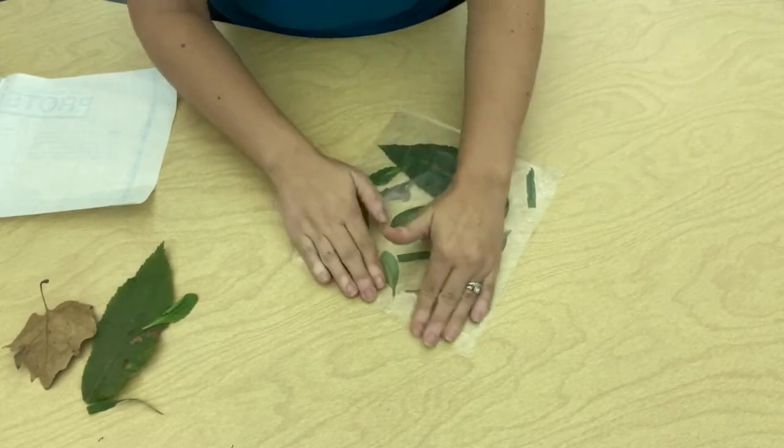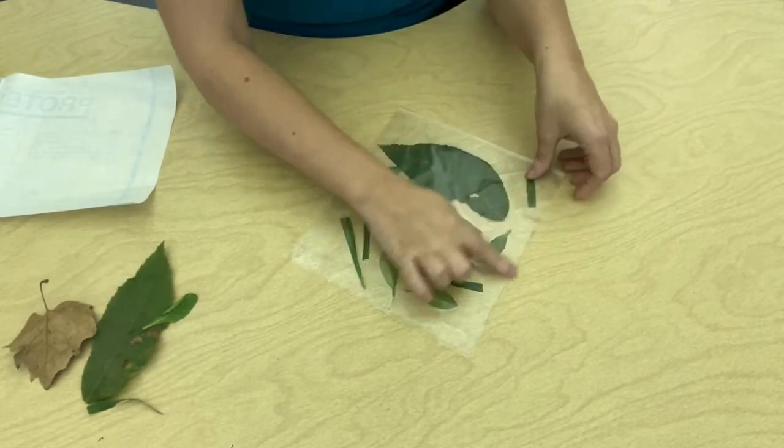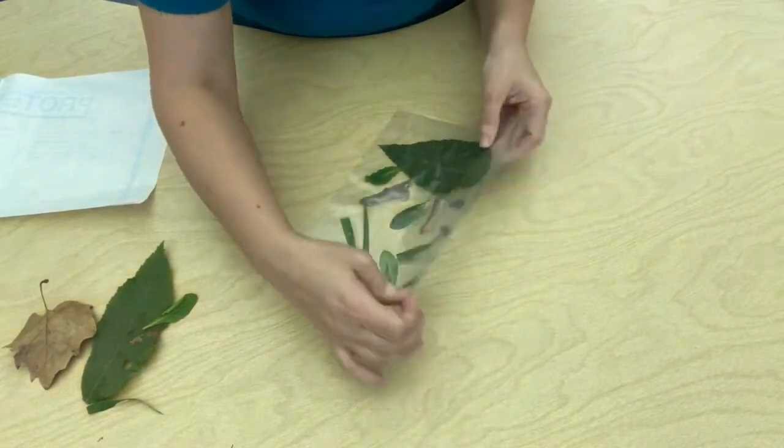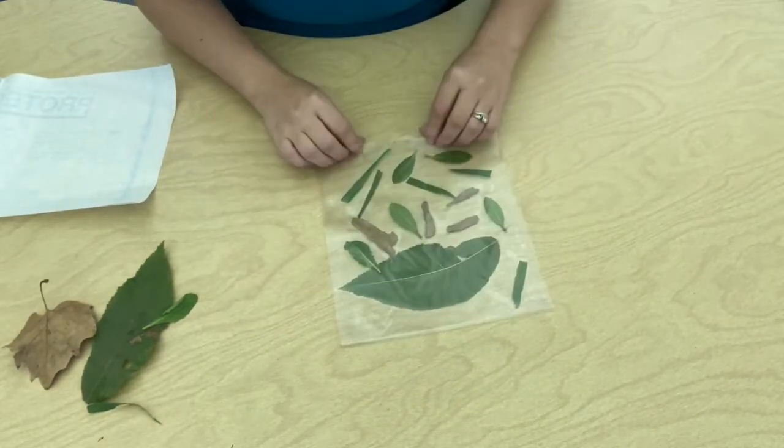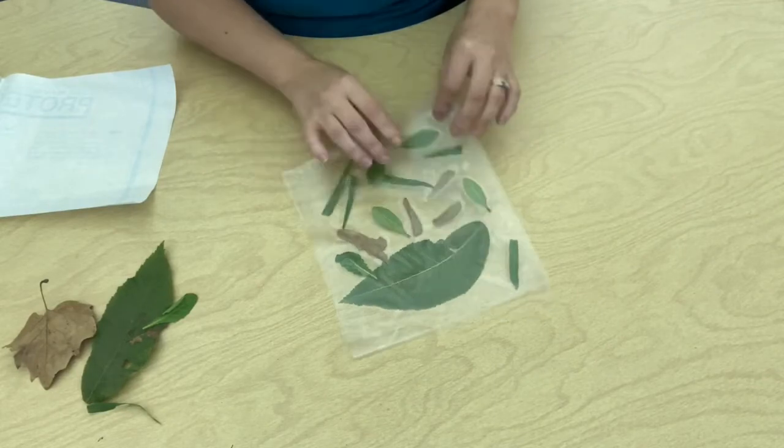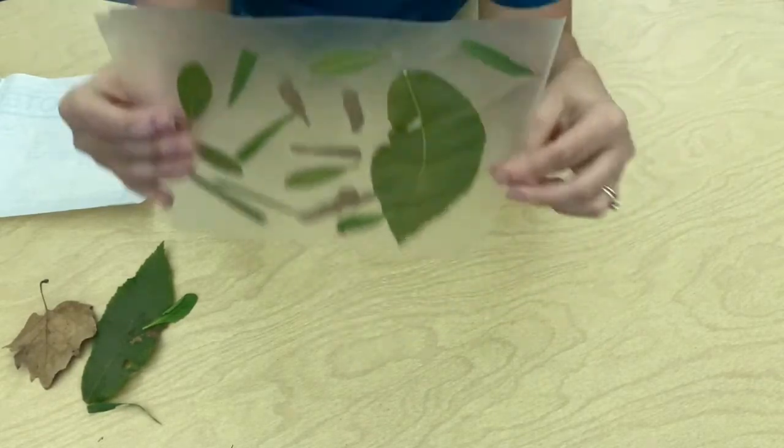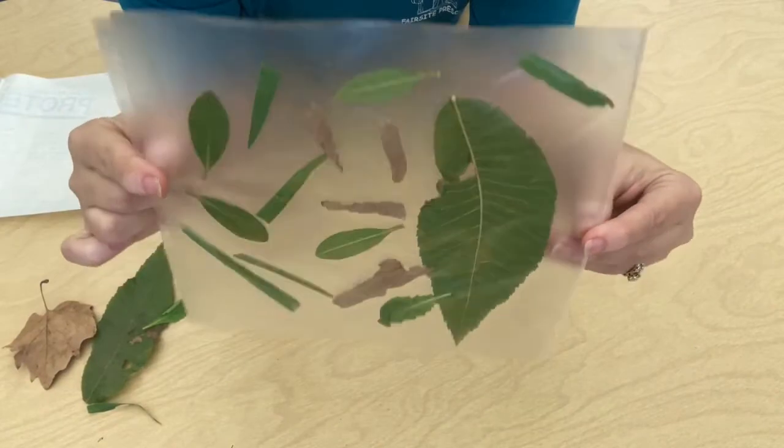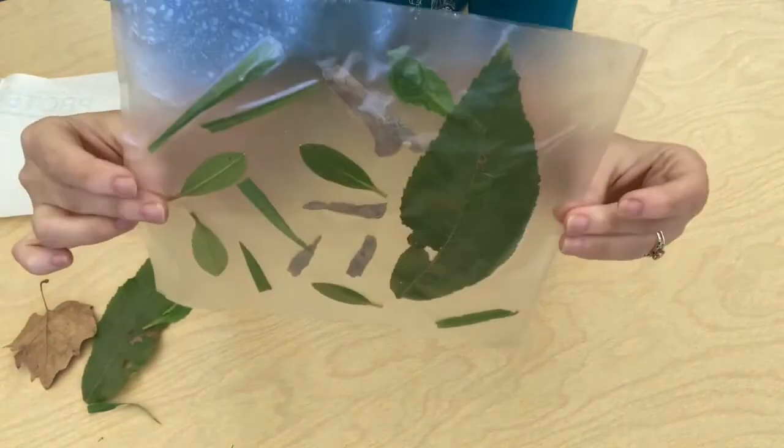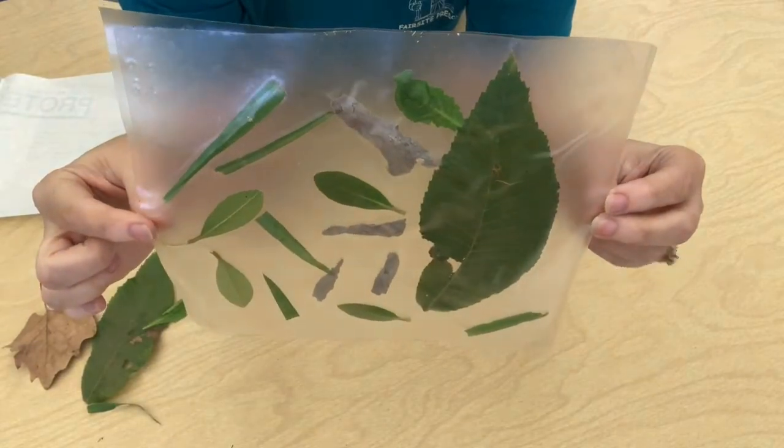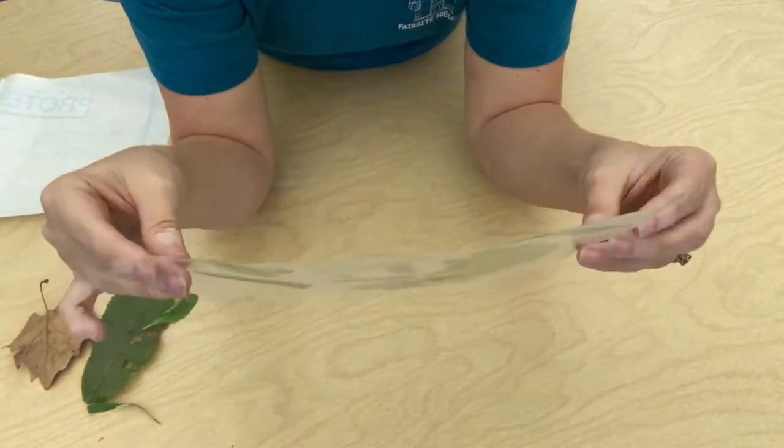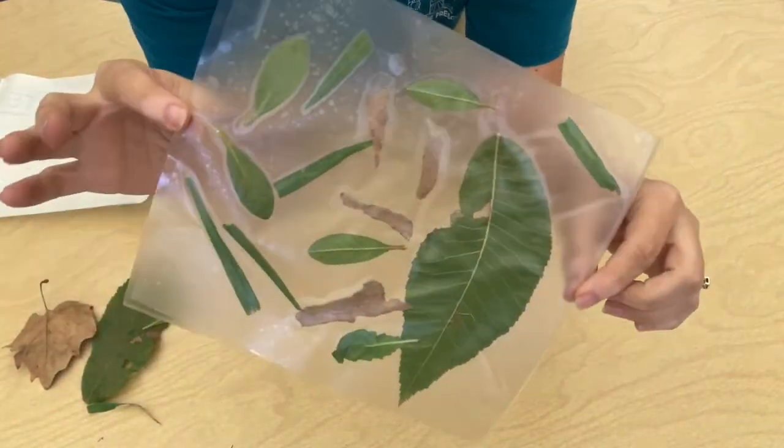There, I think that's good. If you do have some sticky edges, that's okay, you can just cut those. I have a bit of a sticky edge over here and I'm just going to cut that off, or I could just fold it over. But now I have all of my things that I collected outside trapped inside of my sticky contact paper, and now I can hang this up in my window and watch as the sun shines through it.